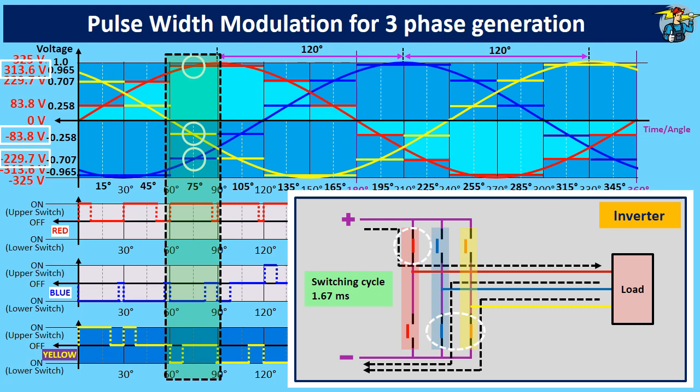Then, to get the negative value of 229.7 volts for the blue color phase line, the duty cycle of the lower IGBT switch should be 70.7%, and the pulse width here is 1.18 milliseconds.